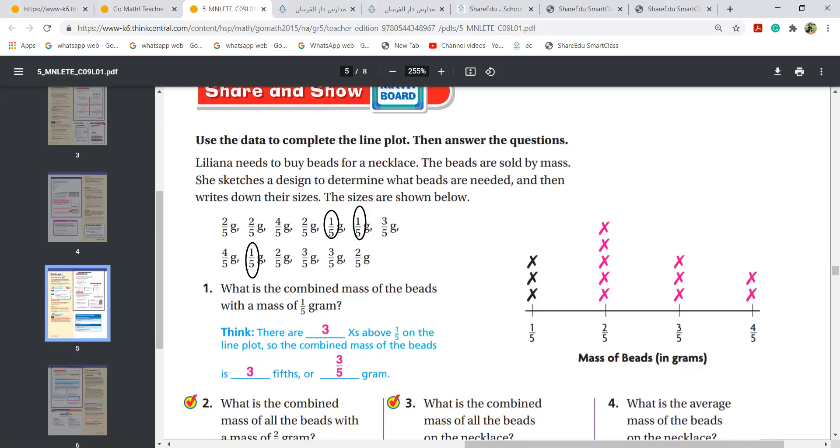Next, Tala, how many 2 over 5 are here? Count and tell me how many 2 over 5 are here. 1, 2, 3, 4, and 5. Correct, so I have to put 5 crosses: 1, 2, 3, 4, 5.